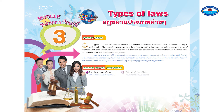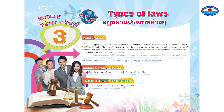Learning content: one — meaning of types of laws; two — features of types of laws. Learning objectives: one — able to explain the meaning of different types of laws; two — able to specify the features of different types of laws; three — able to communicate in English.